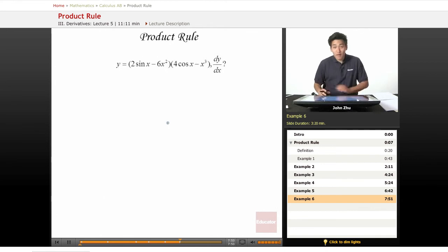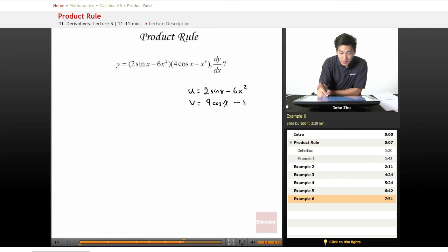Let's take a look at one final example. It's sort of long compared to our other ones, but as long as we follow the product rule, we will be fine. So u equals 2 sine of x minus 6x squared, v equals 4 cosine of x minus x cubed.